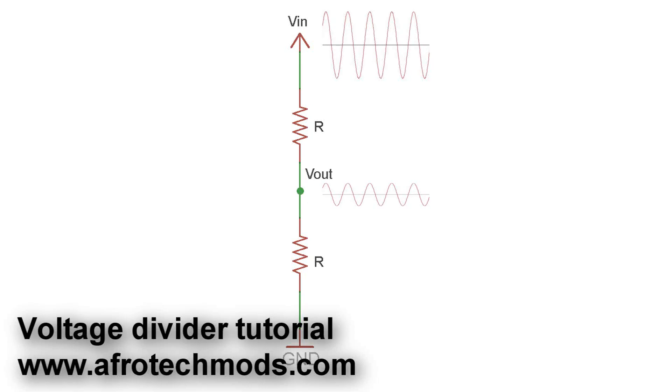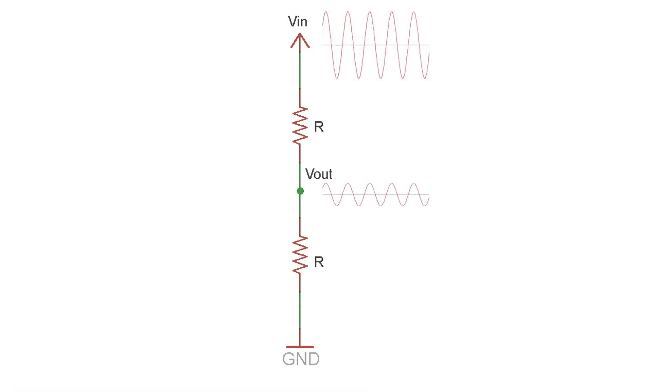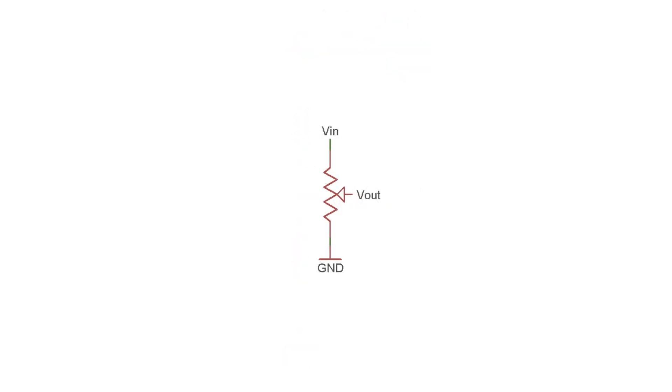This tutorial is about voltage dividers. A voltage divider circuit uses resistors to reduce voltage. You can use voltage dividers to do a lot of things, like create a volume control circuit or generate reference voltages, and much more.